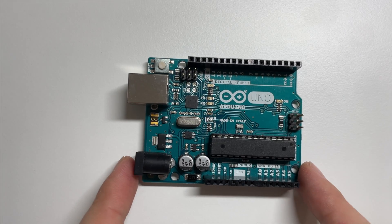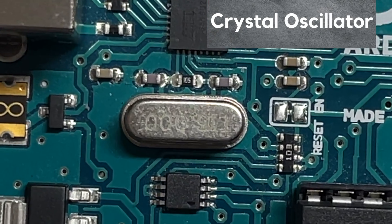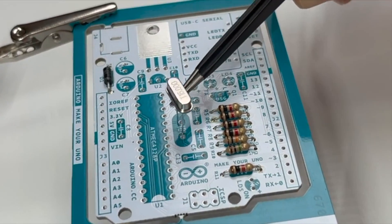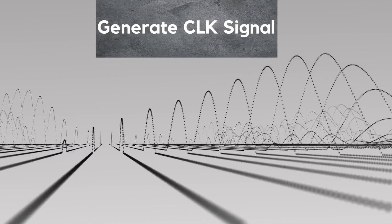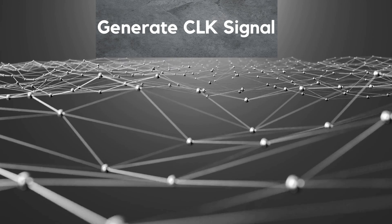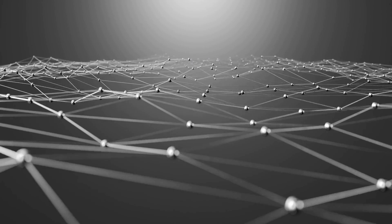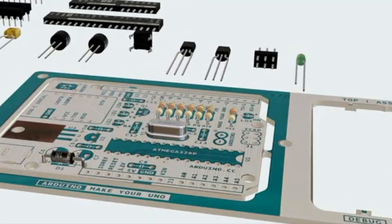Today we're going to talk about one of the most important components in an Arduino board: the crystal oscillator. A crystal oscillator is a type of electronic oscillator that uses the resonant frequency of a crystal to generate a stable and accurate clock signal. This clock signal is then used by the microcontroller in an Arduino board to perform various timing-related functions.